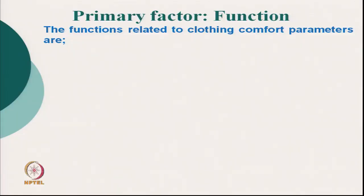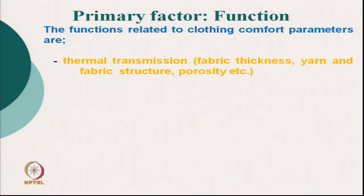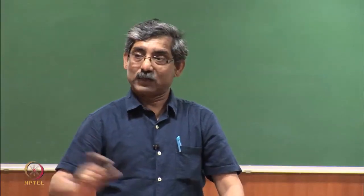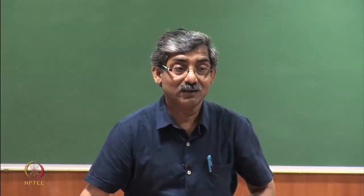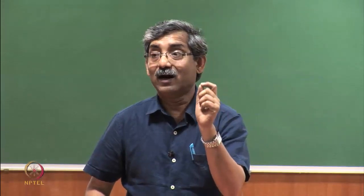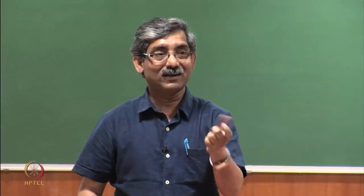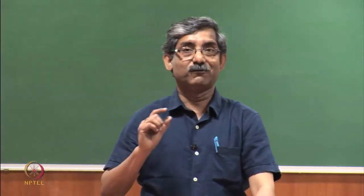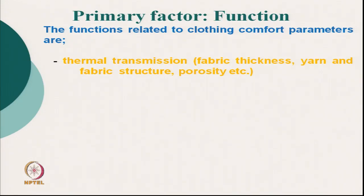Coming to function, the clothing comfort parameters related to function are thermal transmission. By measuring thermal transmission, we can tell whether a fabric is suitable or comfortable — but we cannot say it will be 100% comfortable. A fabric with very good thermal transmission but without softness — if it is harsh — will fail. Thermal transmission can be controlled by fabric thickness, yarn or fabric structure, and porosity.